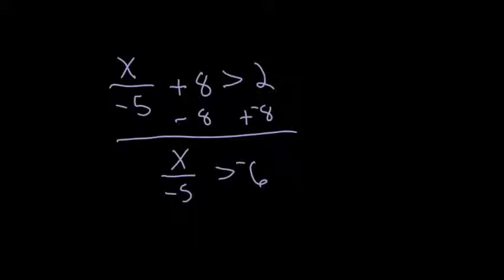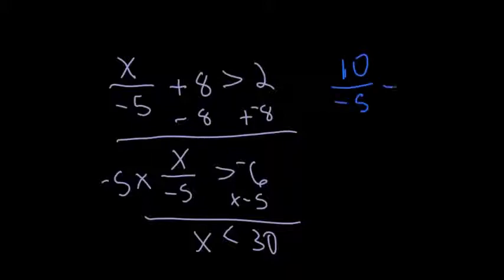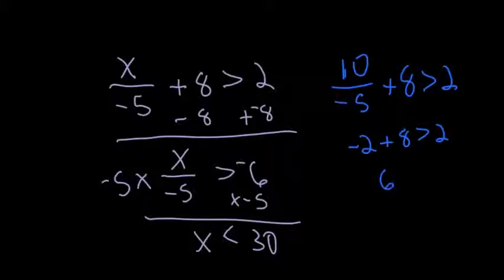To undo divide by negative 5, I multiply by negative 5 on both sides. That leaves just x on the left. Because I'm multiplying by a negative, I need to flip the inequality sign. Then negative 6 times negative 5: 6 times 5 is 30, and negative times negative makes positive. So x has to be less than 30. Let's check with 10 — use friendly numbers. 10 divided by negative 5 plus 8 is greater than 2. 10 divided by negative 5 is negative 2, plus 8 is greater than 2. Negative 2 plus 8: subtract, 8 minus 2 is 6, and 8 is positive with greater absolute value, so I get 6. And 6 is greater than 2 — that's a true statement.